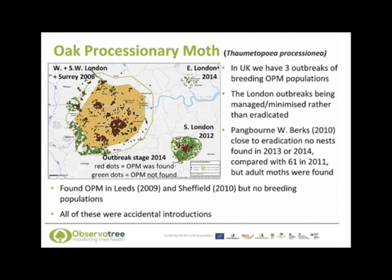Currently it is thought to be impossible to eradicate the outbreak in London and Croydon. Attempts are being made however to manage and minimise its size and spread as well as the impact that the moths will have. The Pangbourne outbreak was very small and no nests were found in 2013 or 2014, compared to the 61 found in 2011, so it is possible that this outbreak is close to eradication. However, pheromone traps caught five adult male moths in 2013 and three in 2014, indicating that the species has not been eliminated from the area. The Forestry Commission continues to work with West Berkshire Council to eradicate the outbreak.